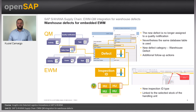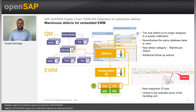From the embedded extended warehouse management side, there is a new inspection ID type for the QM defect, letter G, which is linked to the selected stock of the handling unit, and with the warehouse defect created in the QM side, allowing us to see the warehouse defect number in the embedded EWM stock.